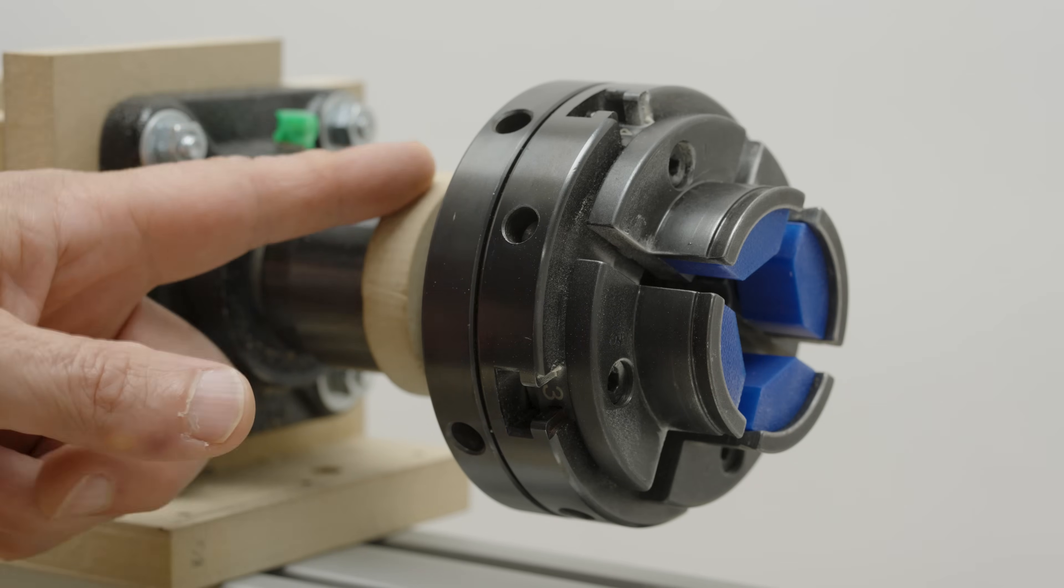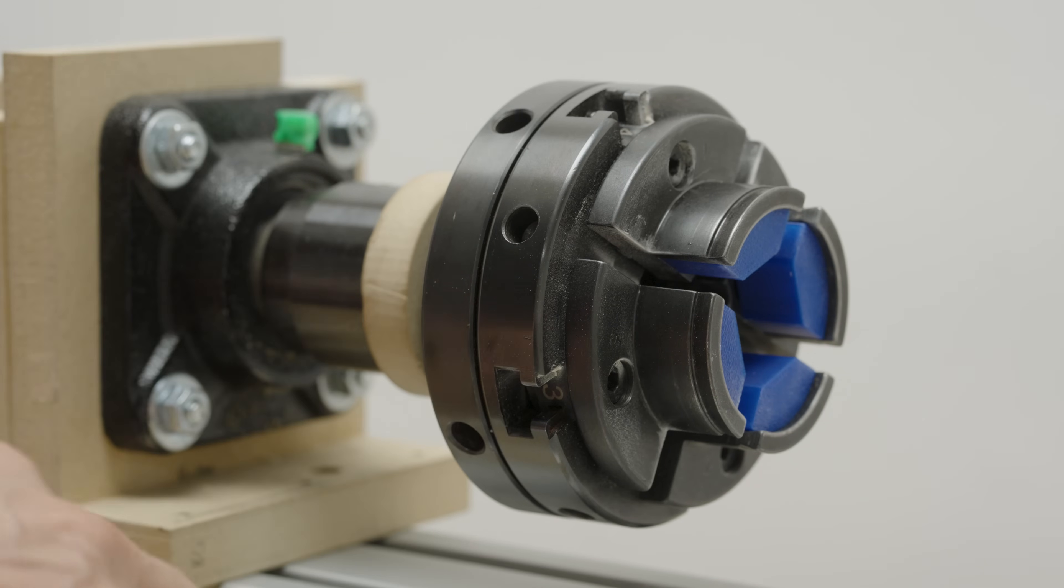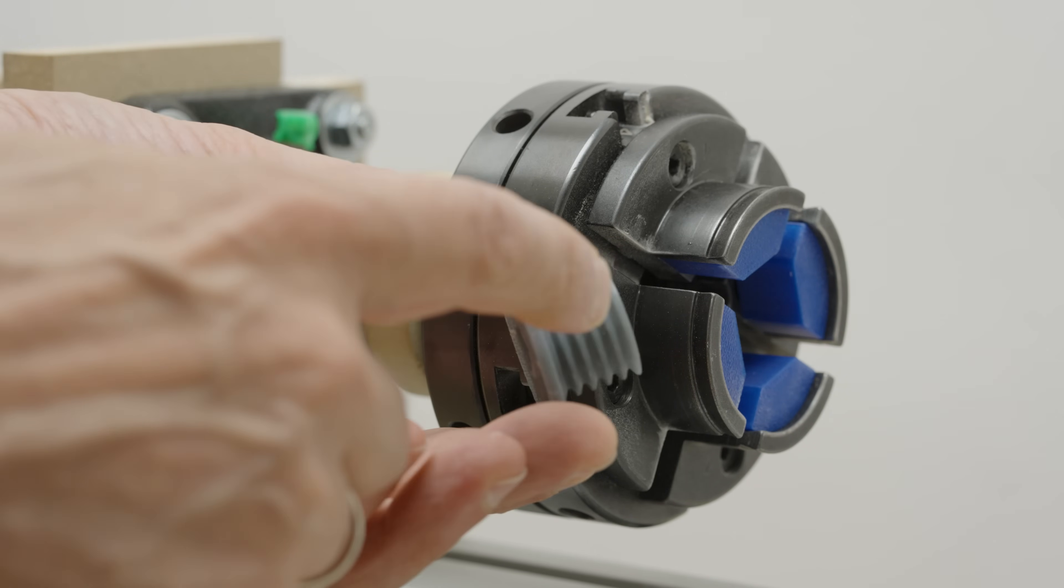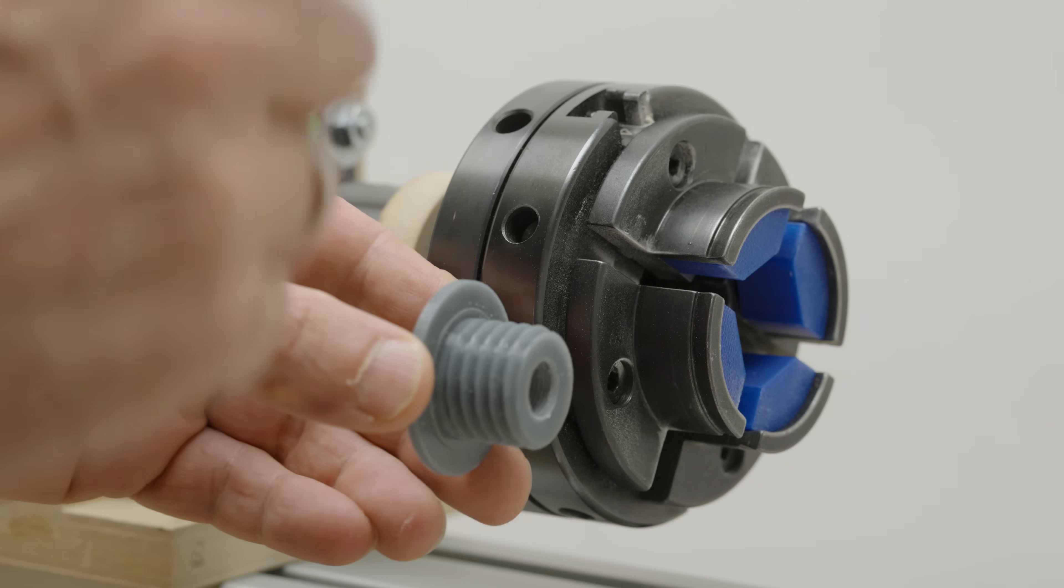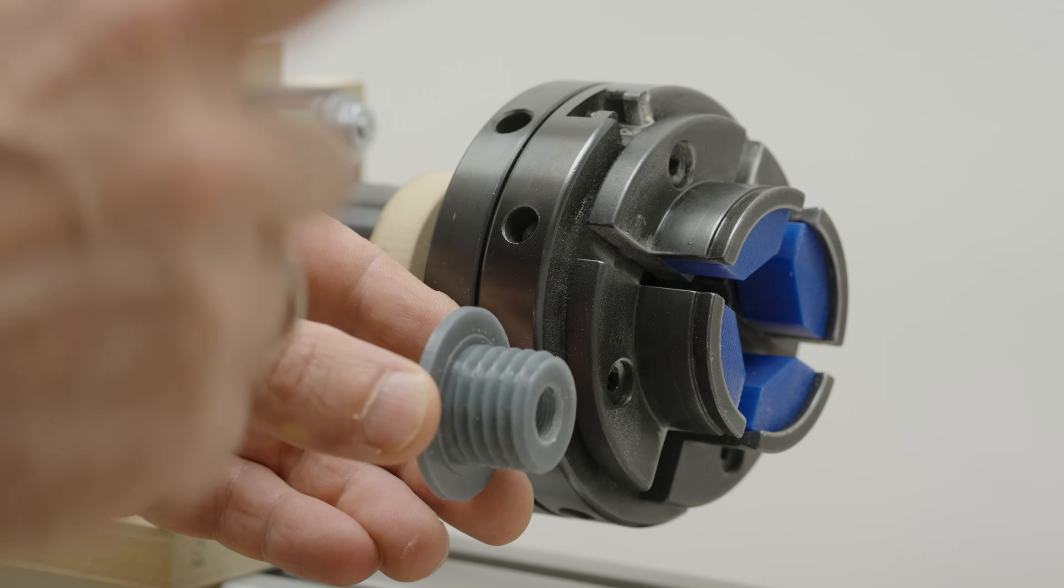My lathe only had a half inch bolt. This is one inch. So I 3D printed a half inch to one inch adapter. I couldn't find this anywhere. This was extremely helpful.